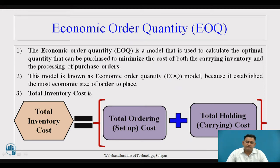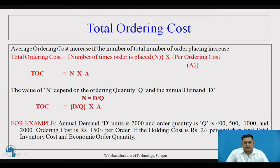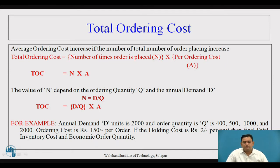Coming to economic ordering quantity, which is the main important technique for inventory control or material management. The economic ordering quantity is a modeling technique used to calculate the optimal quantity that can be purchased to minimize the carrying inventory cost as well as the purchasing cost. The total ordering cost equals the number of times the order is placed multiplied by the per ordering cost, giving us: Total Ordering Cost = (D/Q) × A, where D is annual demand, Q is ordering quantity, and A is cost per order.